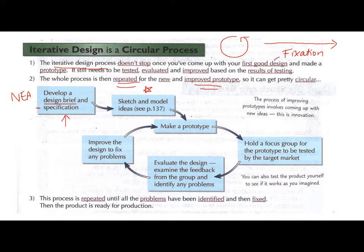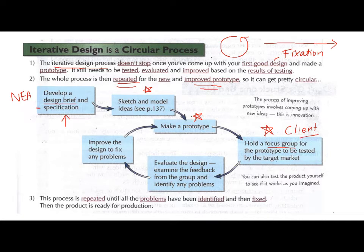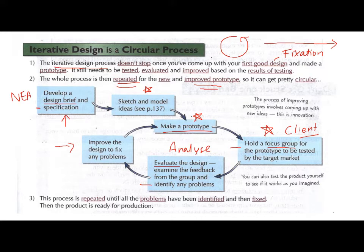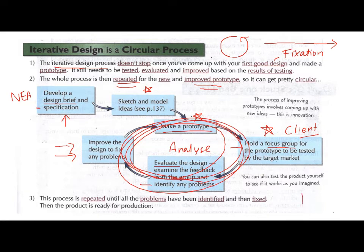You would make a prototype of your first design, which is here. Then you might take your prototype to your client — this example gives a focus group, because in industry, if you're actually a designer, you would take it to a group of people who are your target market, called a focus group. In our NEAs, we take it to our clients. They evaluate the design, you get some feedback, you analyze that, and then you might sketch and improve the design to fix any problems. Then you would make another prototype, take it back to your client, analyze the issues, and improve again — keep going round and round in this circle until you have a complete, fully refined product.